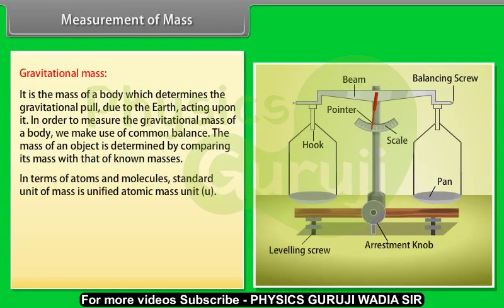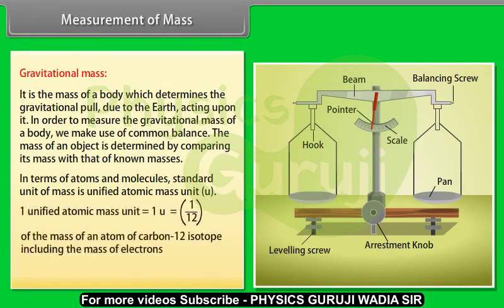In terms of atoms and molecules, the standard unit of mass is unified atomic mass unit, that is U. One unified atomic mass unit is equal to one upon twelve of the mass of an atom of carbon-12 isotope including the mass of electrons, which equals 1.66 into 10 raised to the power minus 27 kg.